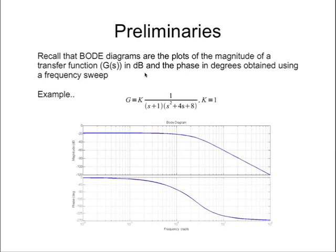Bode plots are nothing but magnitude and phase plots of the transfer function as the frequency of the input signal, which is a pure sinusoid, goes from 0 to infinity. Practically, you go from a very small value like 10 to the power of minus 2 radians per second to 10 to the power of 2 radians per second. The magnitude plot is in decibels and the phase plot is in degrees.